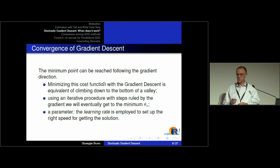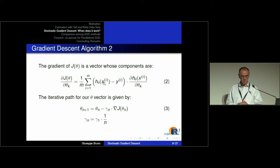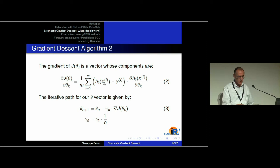This minimum point can be reached following the classical gradient descent, which consists in computing the gradient of the function and then using an iterative procedure with steps controlled by the gradient direction. We have a parameter like the learning rate that drives the speed with which we go to the right point. The gradient is a vector whose components are the derivatives of each component in the theta parameter space. The iterative procedure updates our estimate going downhill according to the gradient direction, using gamma n, the learning rate that shrinks over iterations.